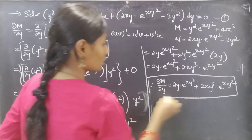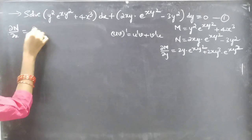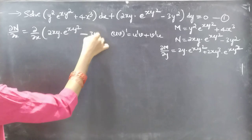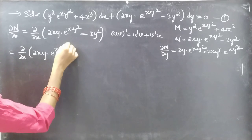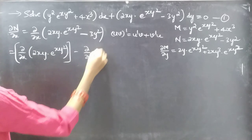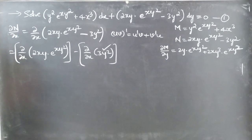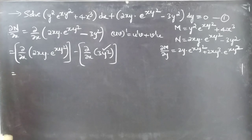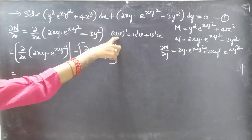Now let's find ∂N/∂x. Partial derivative of N with respect to x equals ∂/∂x of (2xy · e^(xy²) − 3y²). We can write this as ∂/∂x of the first term minus ∂/∂x of the second term. Since it is a partial derivative with respect to x, y is treated as constant, so 3y² is constant and its partial derivative with respect to x is 0. In the first term we have two functions 2xy and e^(xy²), so we apply the product rule again.